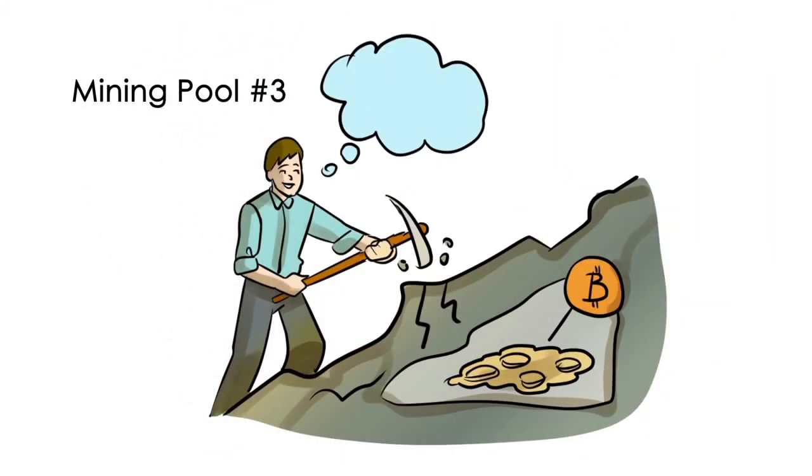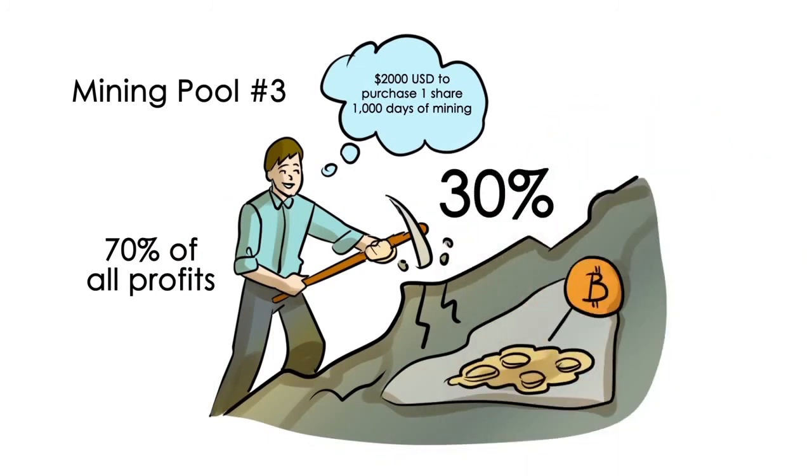Mining pool number three: $2,000 US dollars to purchase one share that pays you for 1,000 days of mining. 70% of all profits will be paid to you on a daily basis, and another 30% will be used to help you purchase additional shares in this mine.